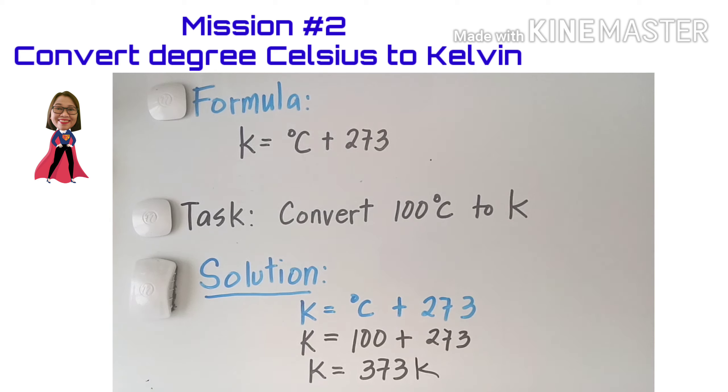So let's plug in the given to the formula. Our formula will be K equals degrees C plus 273. So if we're going to plug in this one, our formula will become K equals 100 plus 273. So when you add this, that will give you 373 Kelvin. That means 100 degrees Celsius is equal to 373 Kelvin.